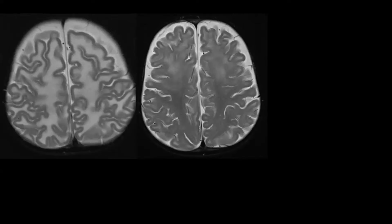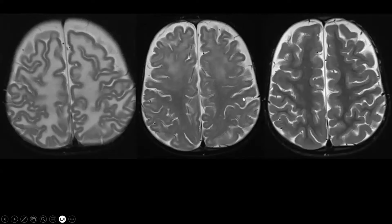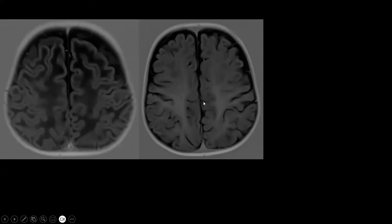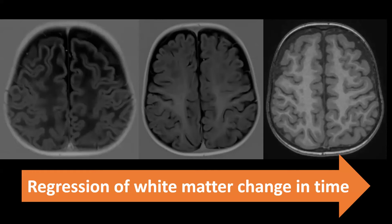The brain looks a bit swollen, which is also the reason the patient has a macrocephaly. On follow-up MRI studies performed at different time points, we can see regression of the white matter abnormalities. So you have regression of white matter changes over time. On T1 weighted images, the signal of the supratentorial white matter becomes normal over time, and in this patient the brain looks completely normally myelinated. This regression is possible because the pathological substrate is not a direct lack or loss of myelin.